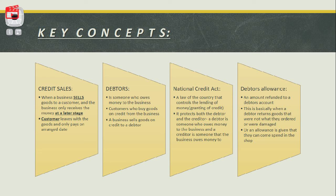We're also going to look at something called my DAJ — the Debtors Allowance Journal. This is an amount that is going to be refunded to a debtor's account. This happens when a debtor returns goods that were not what they ordered or were damaged. For example, a customer purchases something on credit, then gets home and realizes it was damaged or not what they ordered. The business must reverse the transaction or give the customer an allowance to reclaim for those damaged goods.